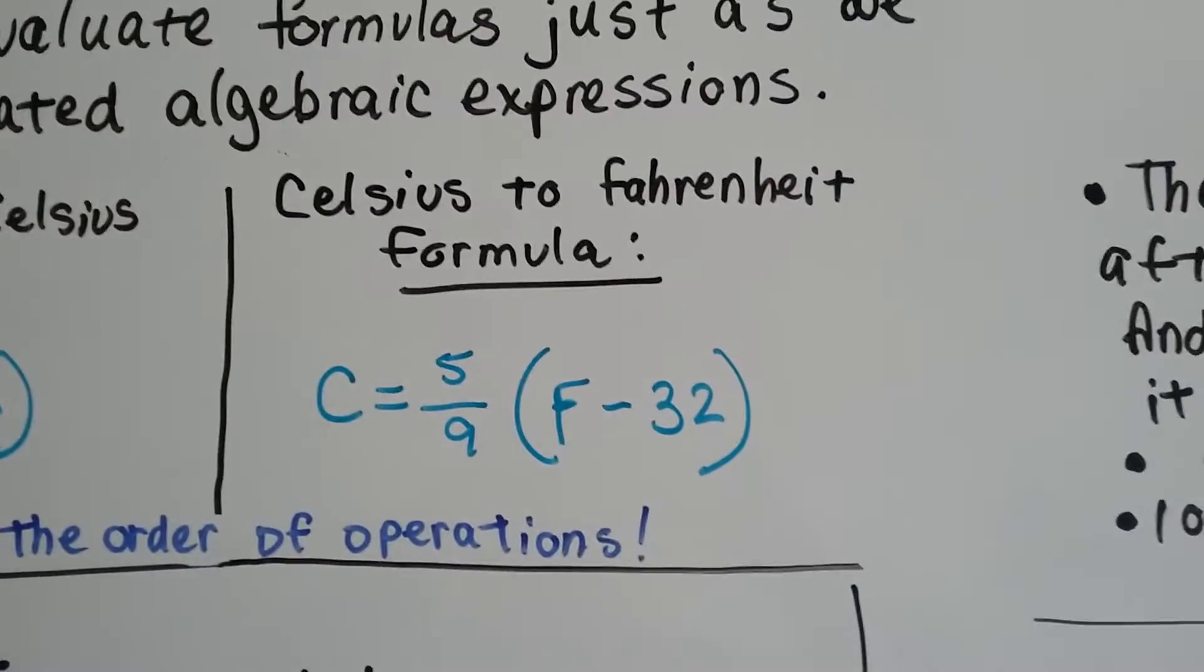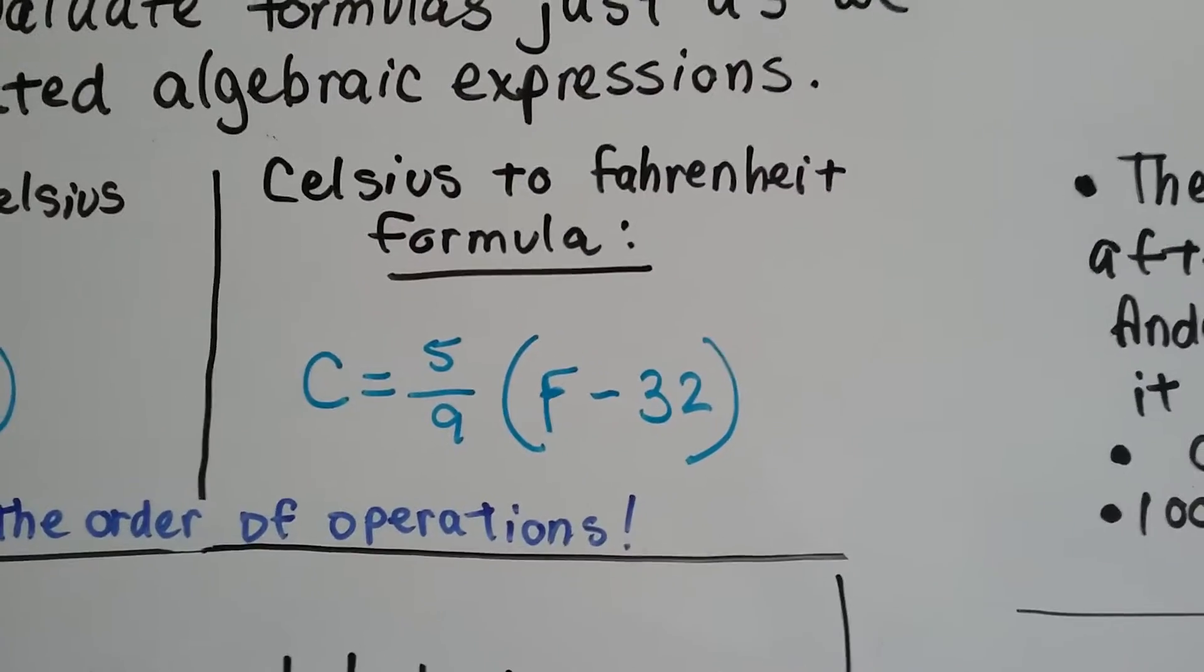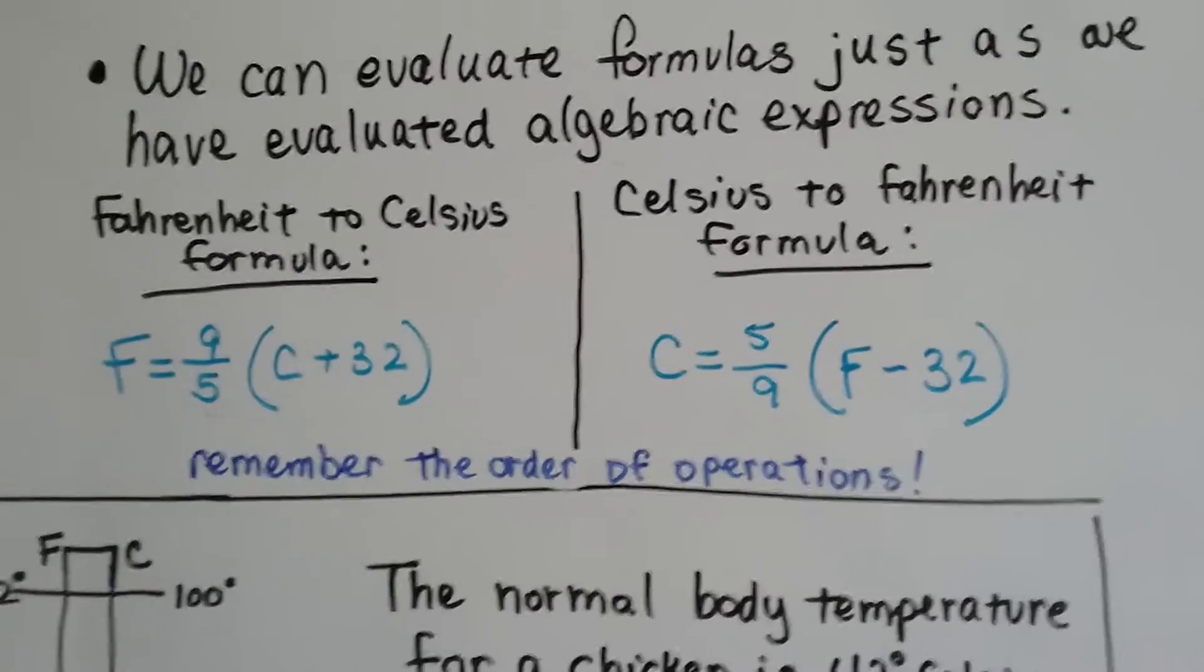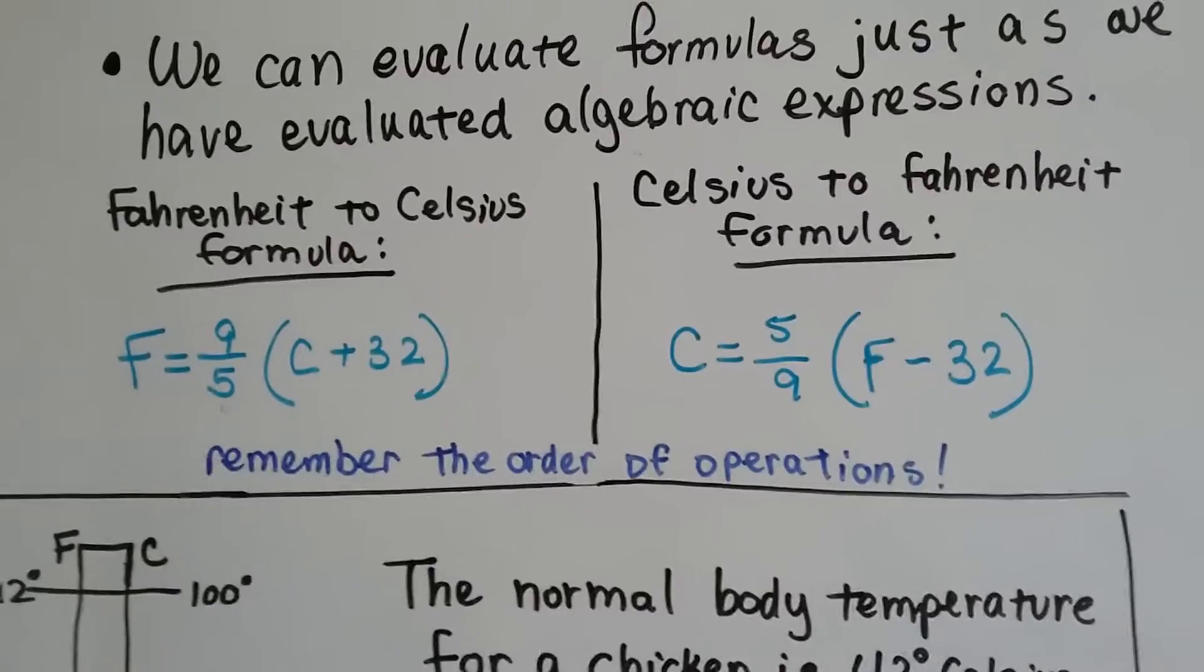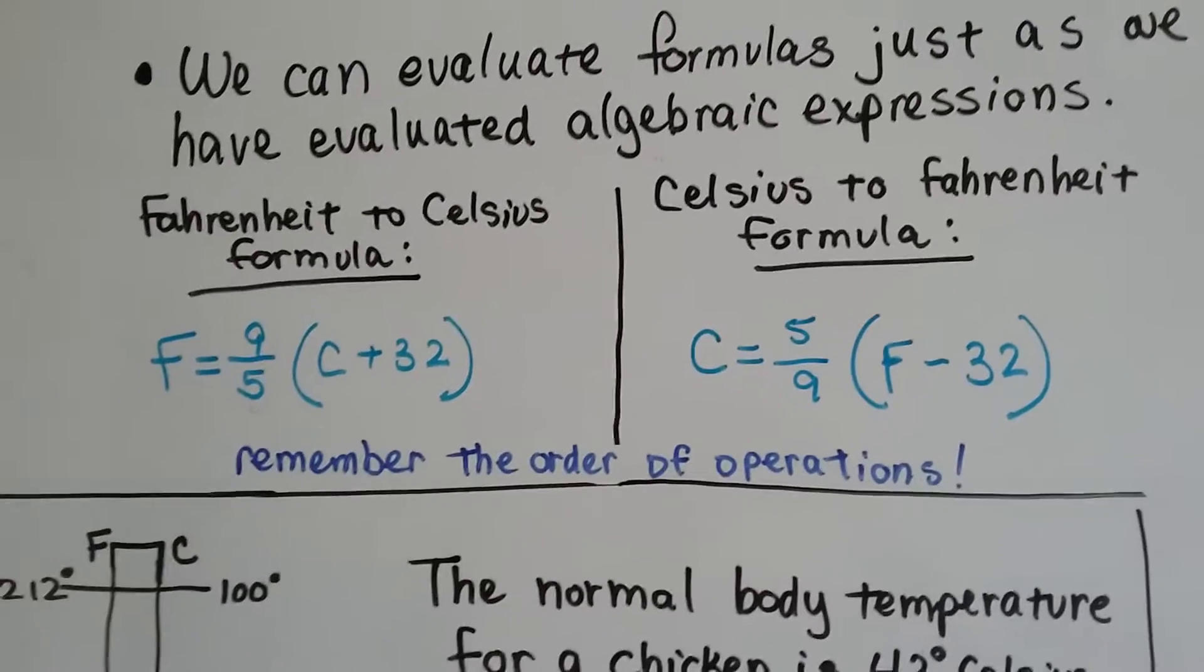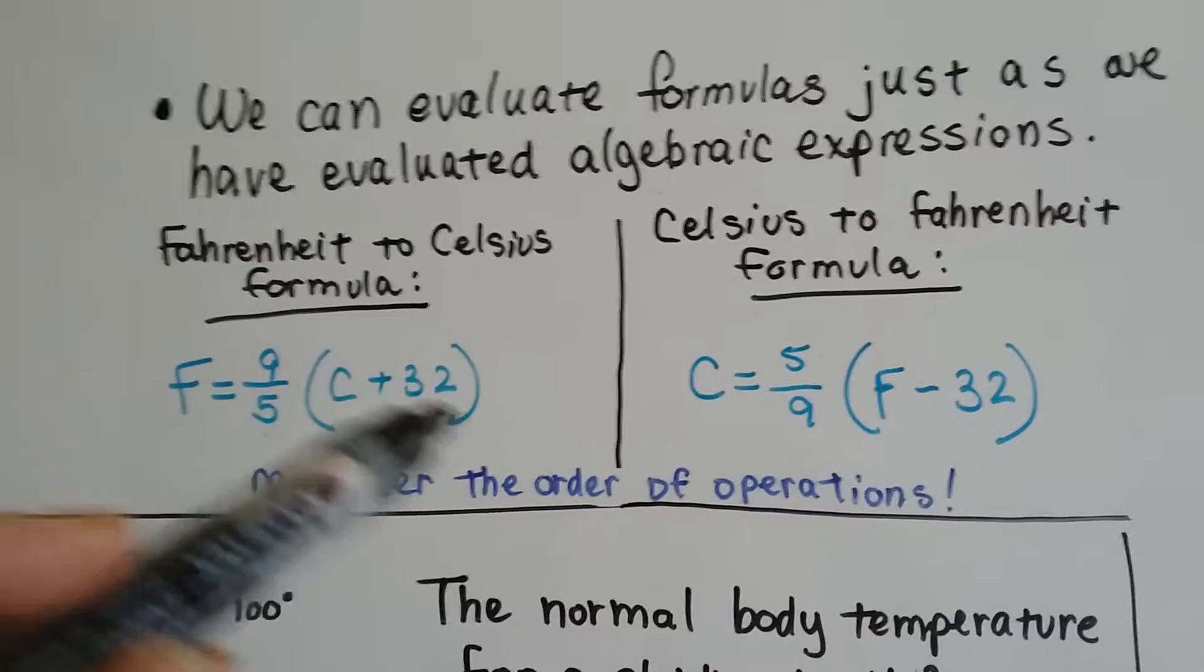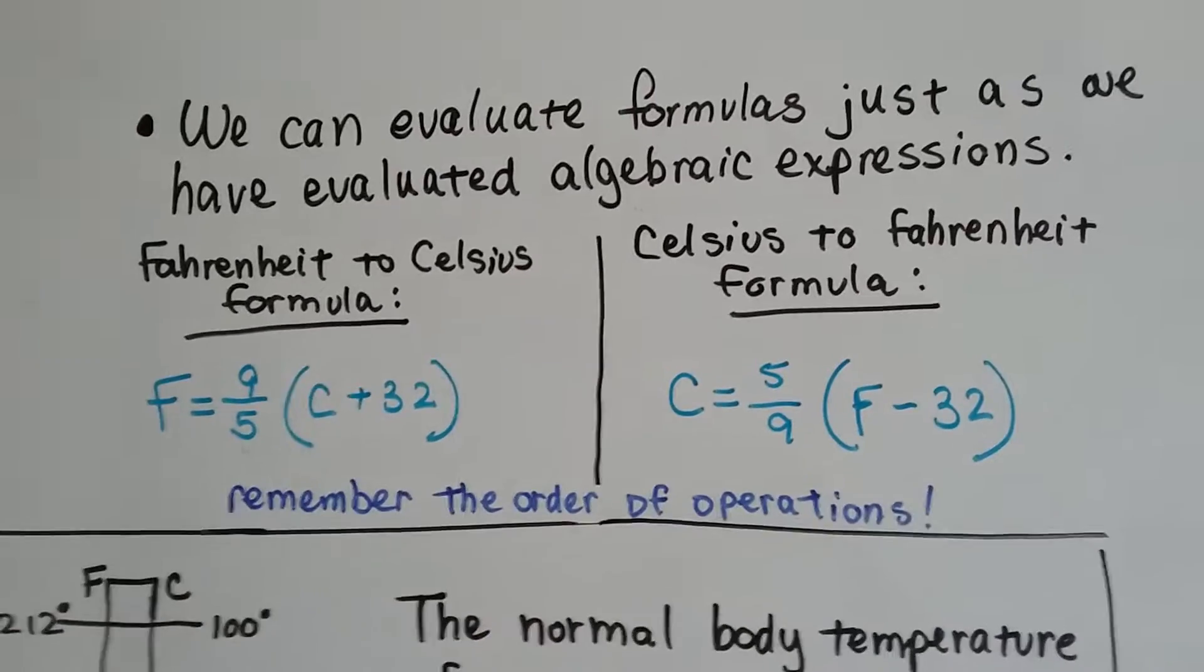And to go from Celsius to Fahrenheit, we do the opposite. If you look at them together, you can see how one formula is a flipped opposite version of the other. Where this is 9 fifths, this is 5 ninths. Where this is Celsius plus 32, this is Fahrenheit minus 32.